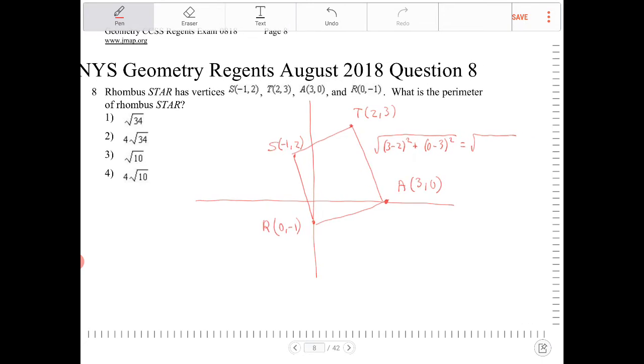3 minus 2, that's 1, so that becomes 1 squared, or just 1. And then negative 3 squared becomes just 9, so plus 9. So this side here is going to be radical 10.